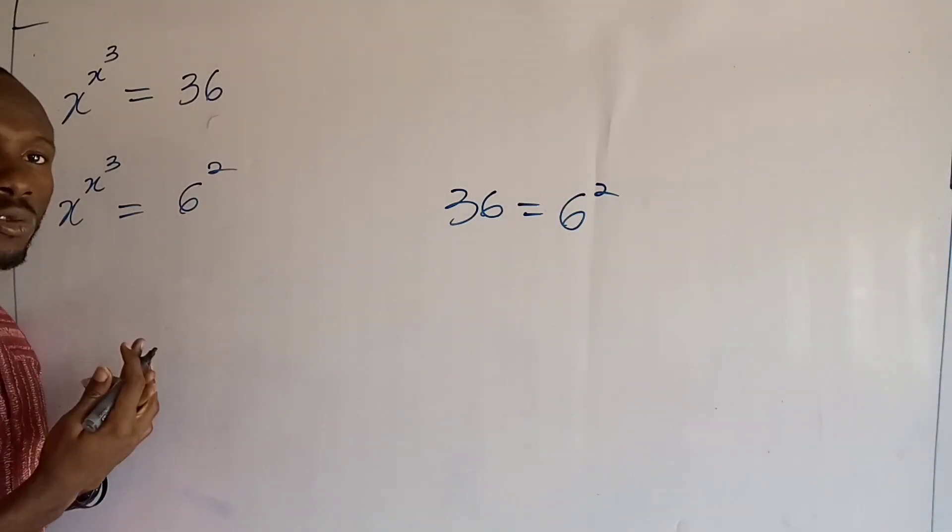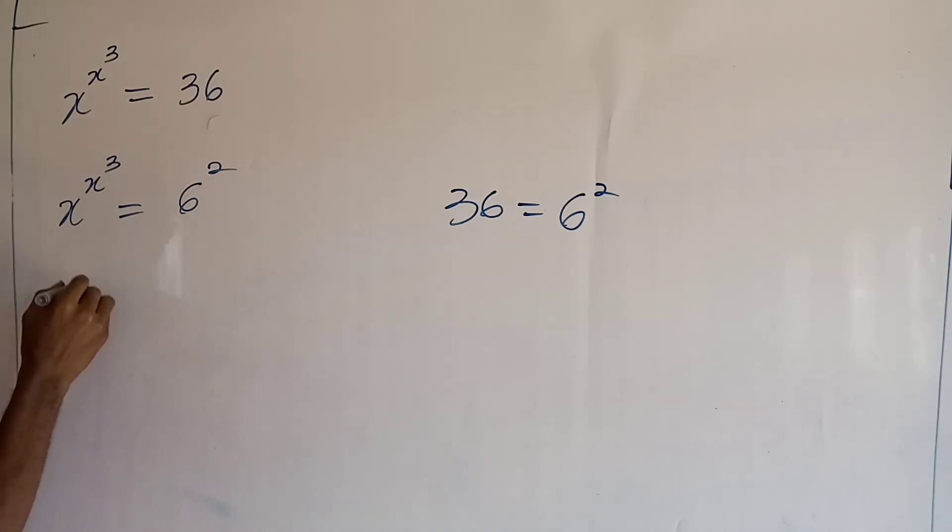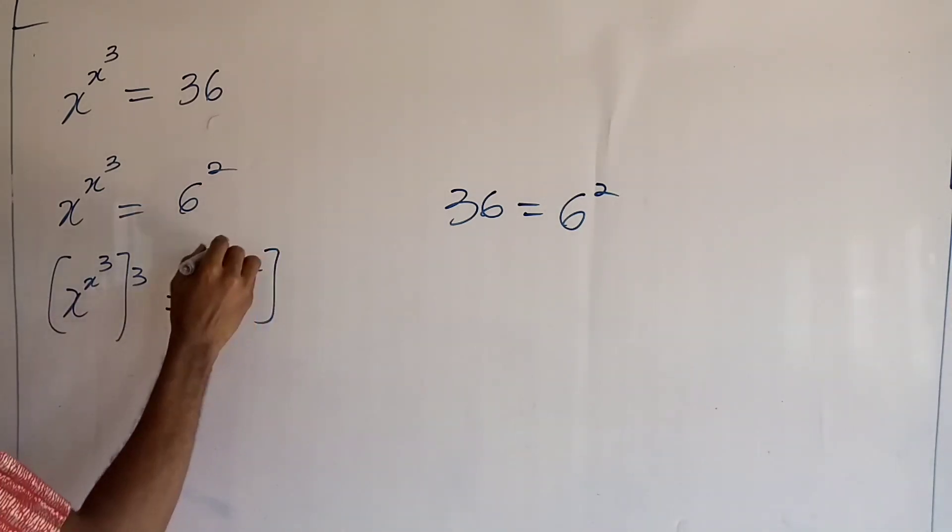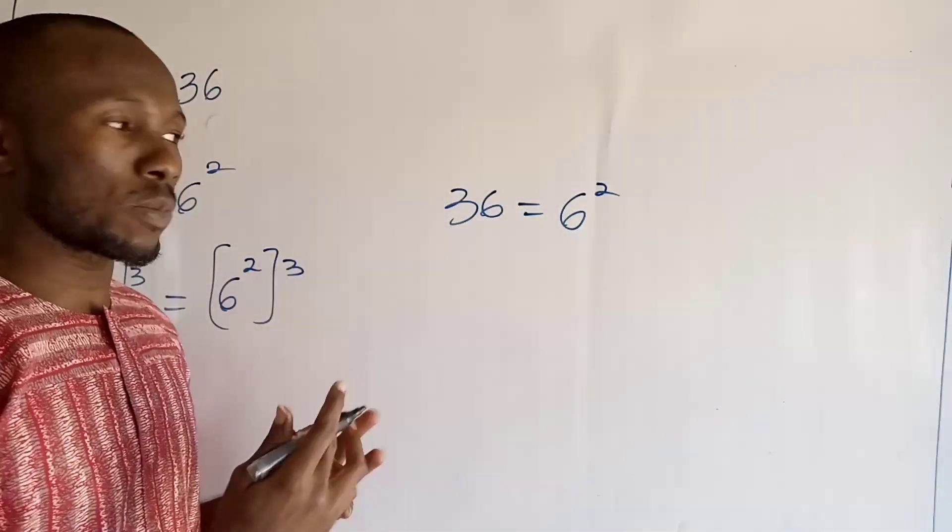And the next thing I want you to do is to take the power of 3 on both sides. So I will have (x^(x^3))^3 is equal to (6^2)^3. And remember one of the laws of exponents.